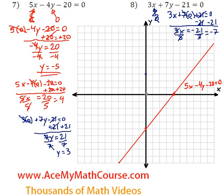So we start over here at 0, 0. And we go 1, 2, 3, 4, 5, 6, 7. That is our x-intercept.